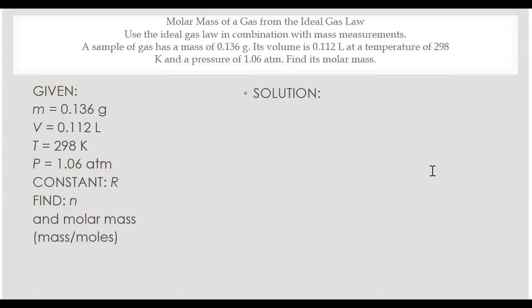So we'll do our same equation, PV equals nRT. This time we'll solve for n and so n is going to be equal to PV over RT.